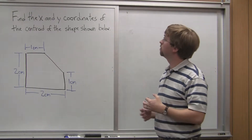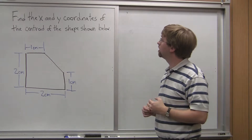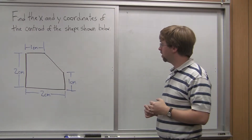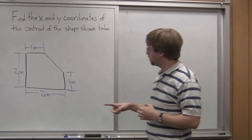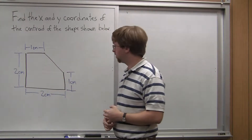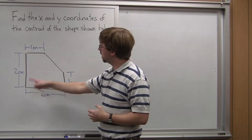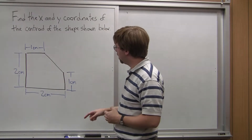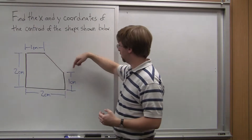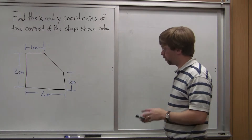In this video, we're going to be working on this problem. We're asked to find the x and y coordinates of the centroid of the shapes shown below. We've got a square with a triangular cutout on one side. The square is two centimeters by two centimeters, and that triangular cutout takes a centimeter off of each of the sides.